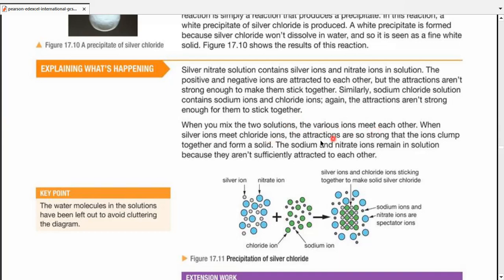When you mix two solutions, the various ions meet each other. When silver ions meet chloride ions, the attractions are so strong that the ions clump together and form a solid. The sodium and nitrate ions remain in the solution because they aren't sufficiently attracted to each other. So that's what happens when a precipitation reaction occurs, which means the attraction of silver ion with chloride ion is much more as compared to what it has for nitrate ion. We keep the water molecules in the solution left out to avoid cluttering of the diagram, so you can't see any water molecules.